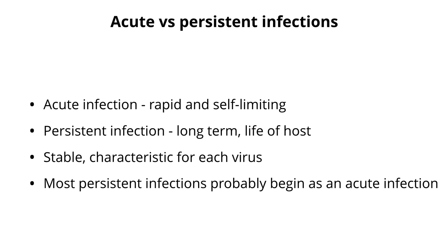Even within a virus family there are differences, but they're always stable. For a particular virus like measles virus or herpes simplex virus, the pattern of persistence is stable — it doesn't change over the course of an infection. One key concept you should remember is that persistent infections begin as an acute infection. You acquire a virus infection, you have an immune response to it, you may or may not have symptoms, and then in contrast to an acute infection, the virus is not cleared and it goes on to persist the life of the host.